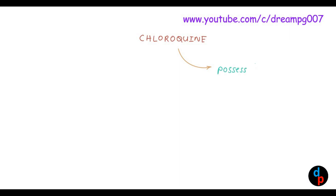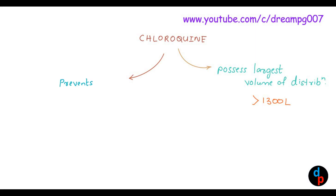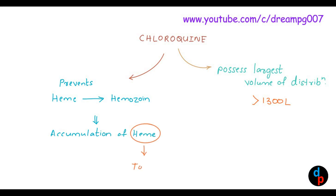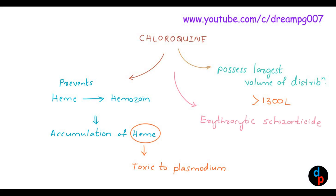Chloroquine is a drug that possesses the largest volume of distribution — it is about greater than 1300 liters. Chloroquine prevents the conversion of heme to hemozoin. As a result, heme gets accumulated in the body. This heme is toxic to Plasmodium, the parasite responsible for causing malaria. That is the mechanism of action of chloroquine in malaria. Chloroquine is an erythrocytic schizonticide.